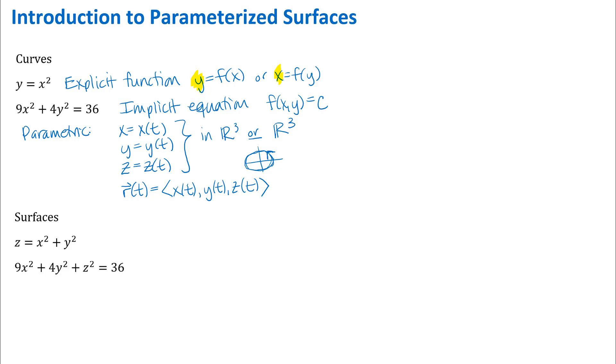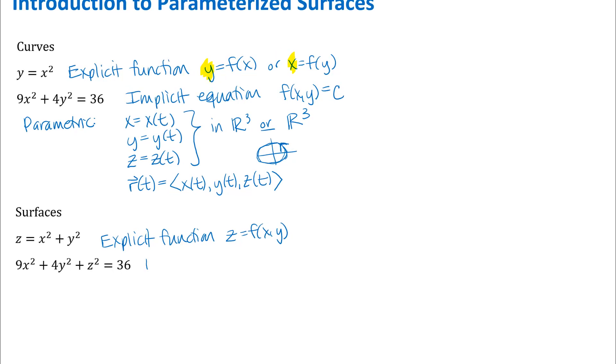When we talk about surfaces, I've got two equations here and the same idea here. I've got an explicit function z equals f of xy or we might be able to write some equation as x equals a function of y and z or y equals a function of x and z. And the next equation there you should hopefully at this point in the semester recognize that is an ellipsoid. That's an implicit equation and we had those when we had level surfaces of functions of three variables, but that allows us to deal with more complicated surfaces.